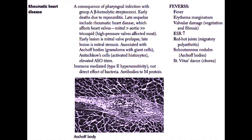Acute rheumatic heart disease can cause a pancarditis, including an endocarditis, myocarditis, and pericarditis. Most deaths early in rheumatic heart disease occur because of myocarditis and heart failure. The late sequelae — meaning years from the initial heart disease — include rheumatic heart disease affecting the heart valves.